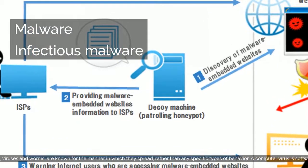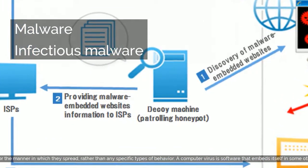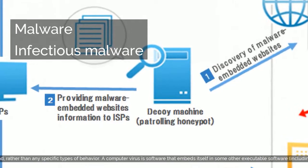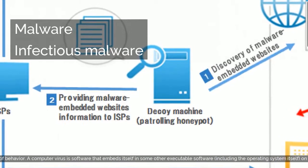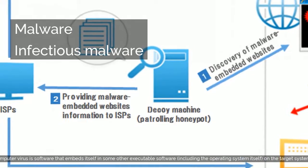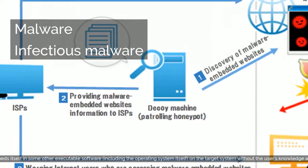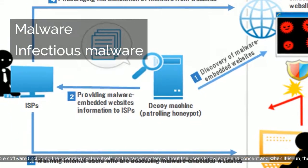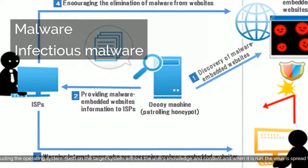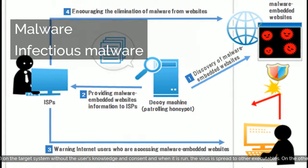A computer virus is software that embeds itself in some other executable software, including the operating system itself, on the target system without the user's knowledge and consent, and when it is run, the virus is spread to other executables.